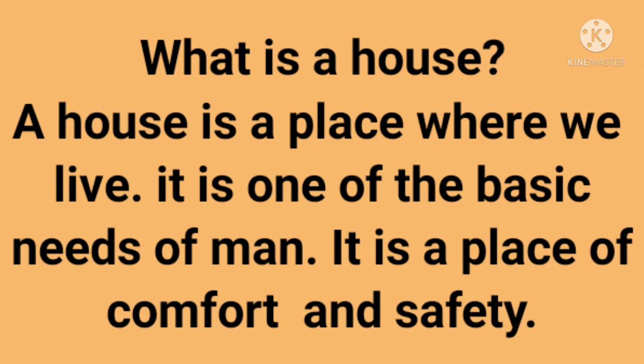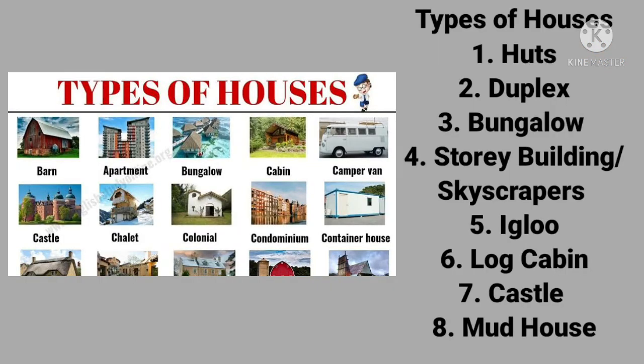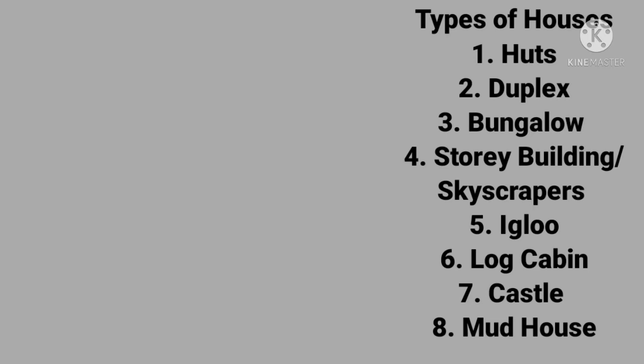Looking at this topic — housing, population and housing — it's very important to consider some demographics regarding data concerning housing and population in every nation, especially Nigeria. Water also relates to population. The types of houses include huts, duplexes, bungalows, story buildings or skyscrapers, igloo, log cabin, castle, and mud house.